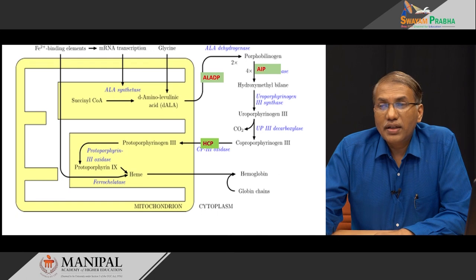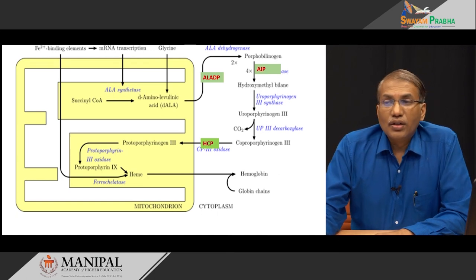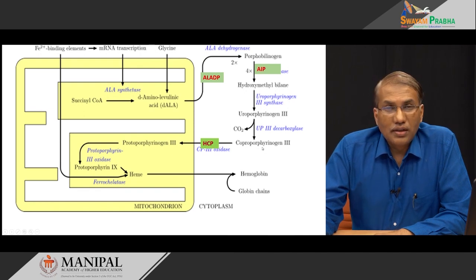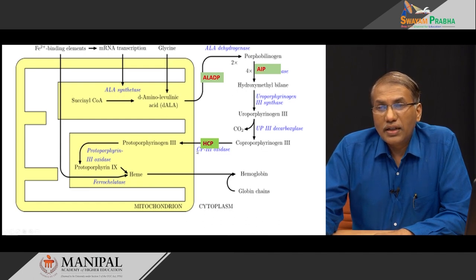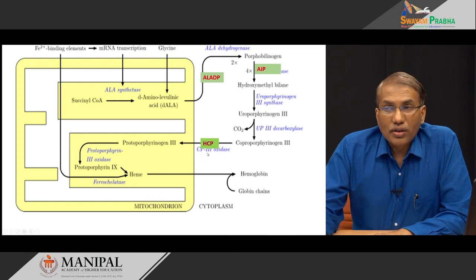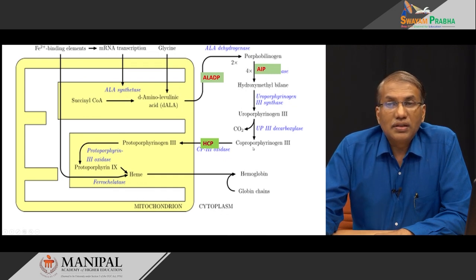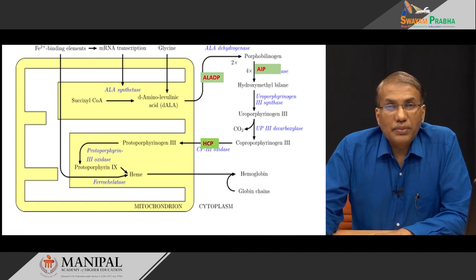The next acute porphyria is hereditary coproporphyria. Unlike the previous two, coproporphyrinogen — a porphyrin — has already been formed and accumulates here. The enzyme defect is coproporphyrinogen III oxidase, which occurs in the mitochondria. Because this enzyme is defective, it causes severe photosensitivity, and it is one of the acute types of porphyria.